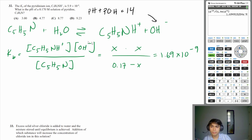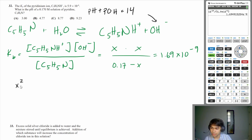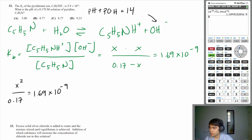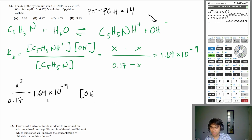Since Kb is very small, dissociation is minimal, so we can use the 5% rule: 0.17 − x ≈ 0.17. This simplifies the expression to x² / 0.17 = 1.69×10⁻⁹. Solving for x by taking the square root of 0.17 × 1.69×10⁻⁹, x — which is our hydroxide concentration — equals 1.69×10⁻⁵ M.